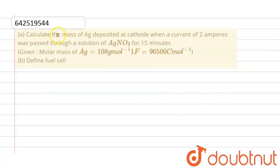Hello everyone, here the question is: calculate the mass of Ag deposited at cathode when a current of 2 amperes was passed through a solution of AgNO3 for 15 minutes.